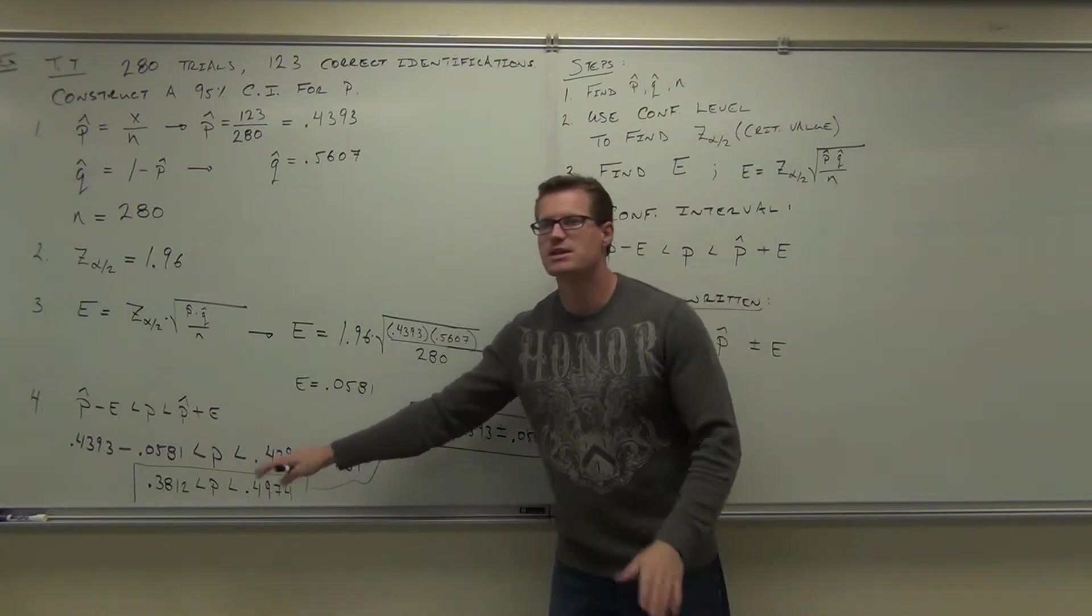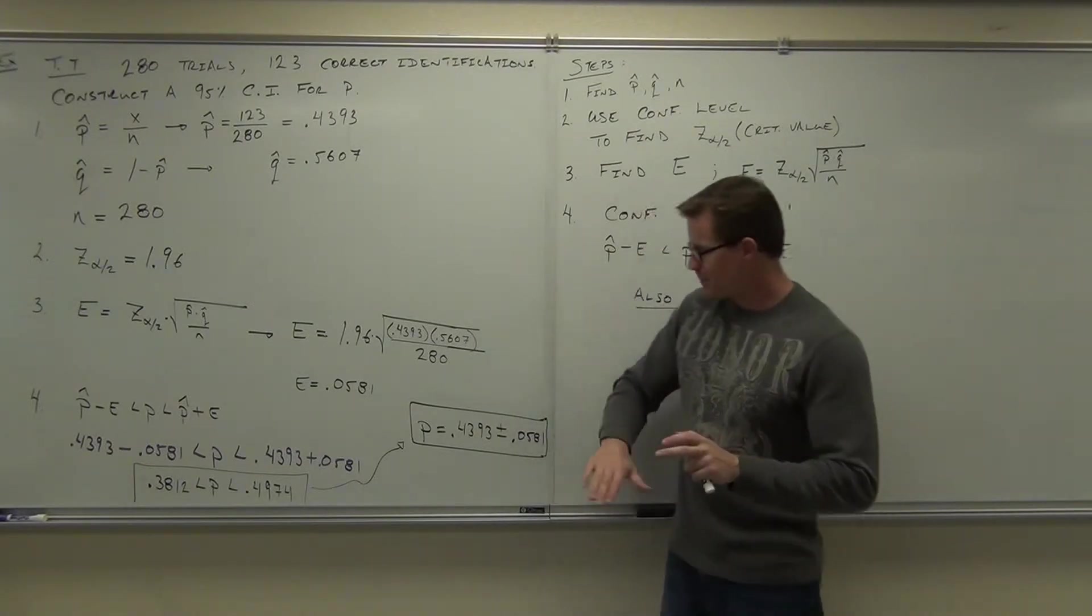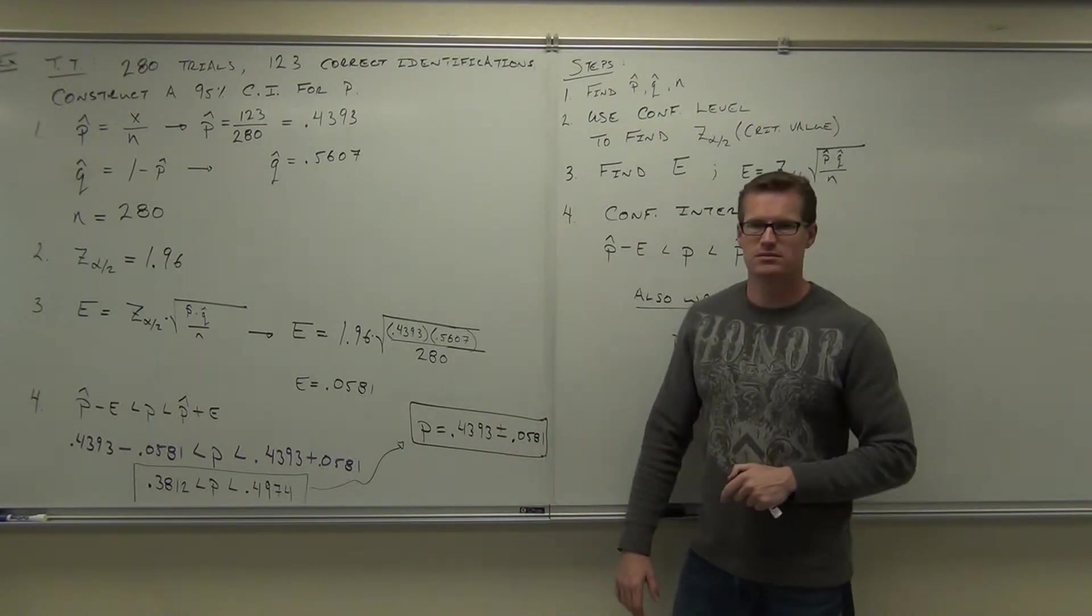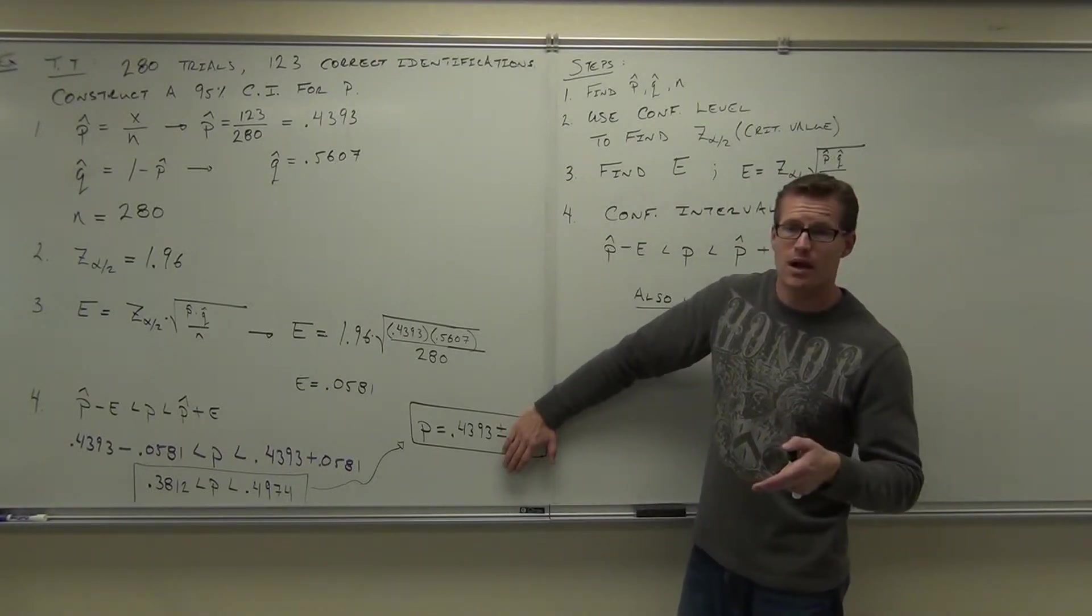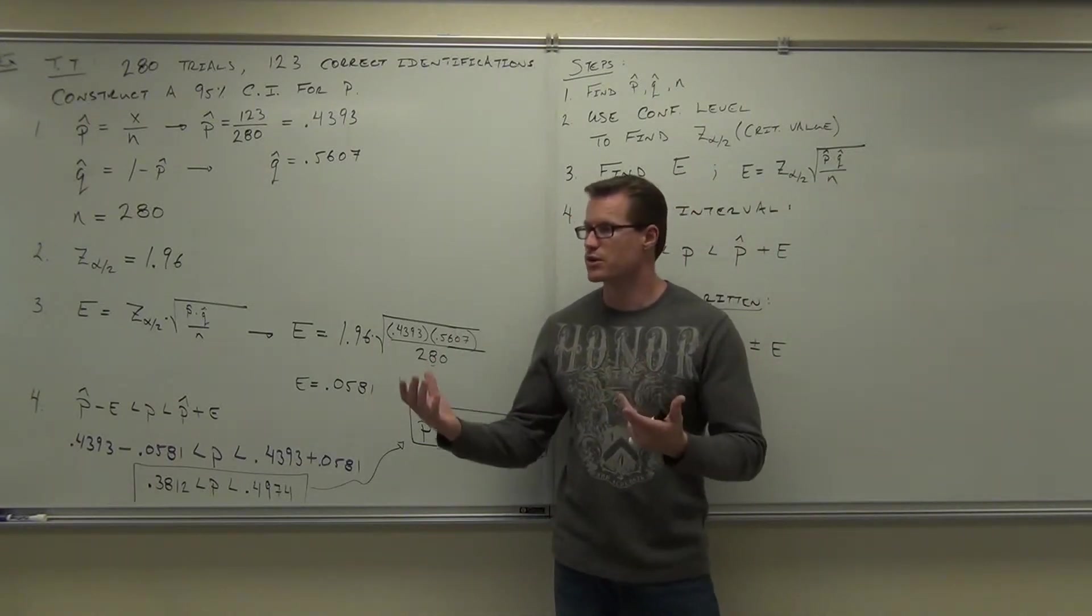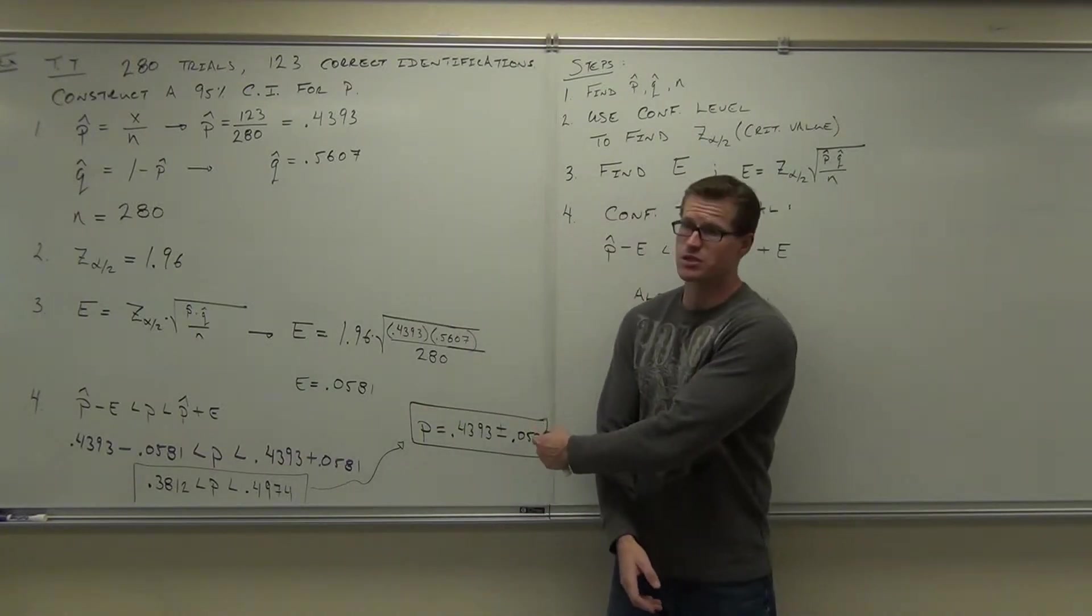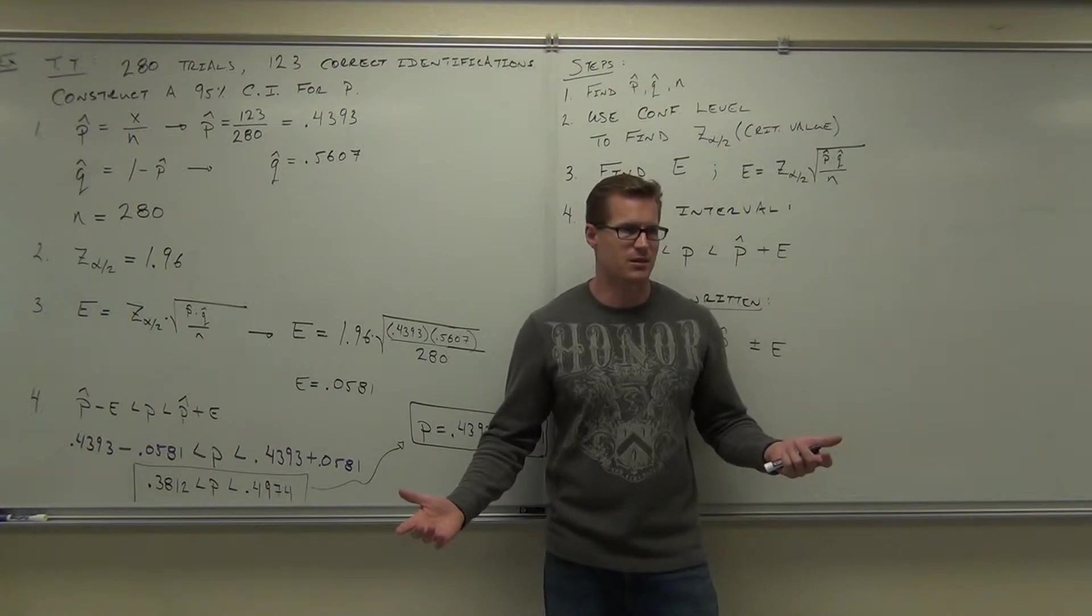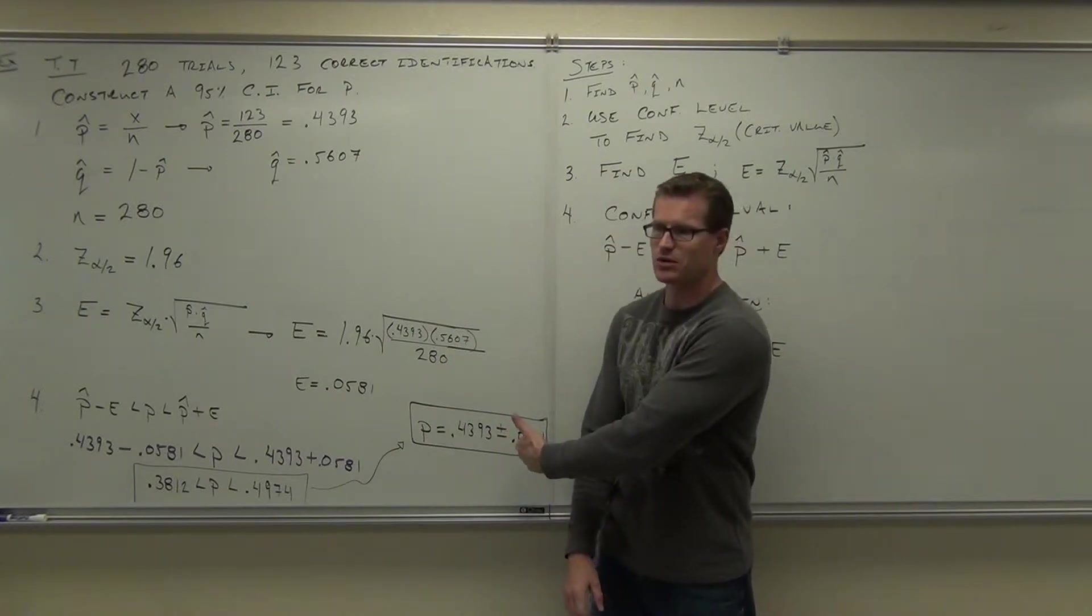95% is typically what you see on the news. They're going to say I don't know exactly what the population proportion is, but I'm pretty sure it's around 44% plus or minus 6%. Do they know it's exactly 44%? Not a chance. However, their sample sizes are sometimes so incredibly large they take thousands of people, and their plus and minus is really small.